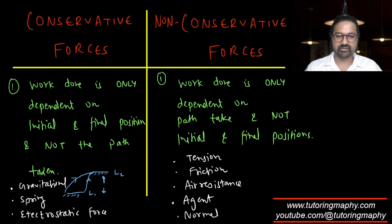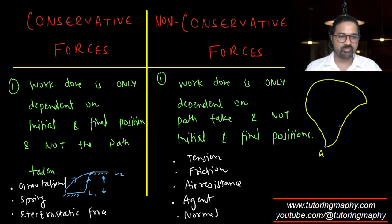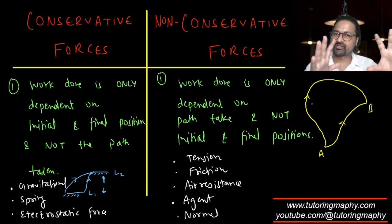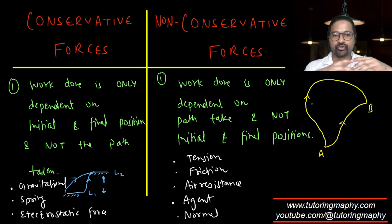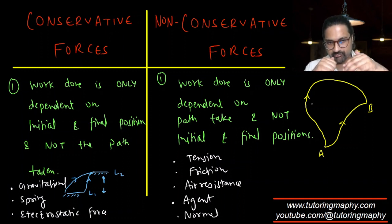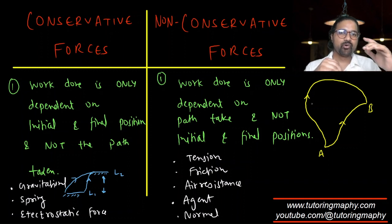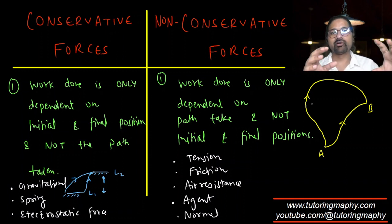Let me take another example to explain why non-conservative forces are path dependent. Let's say you move from A to B using two ways — one is the shorter way and one is the longer way. Assume the friction force (mu times normal reaction) is the same in both cases. Work done is F dot d, so the more distance you cover, the more work friction does. Obviously the work done over the longer path is going to be more than for the shorter path.